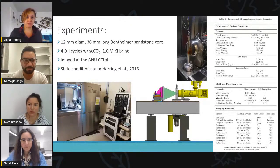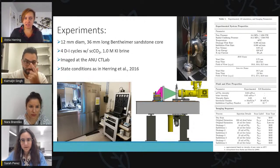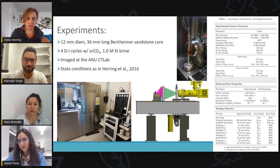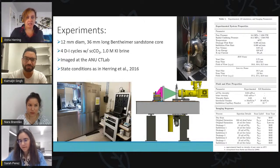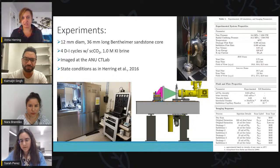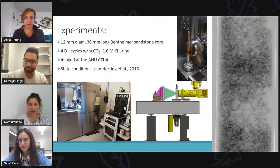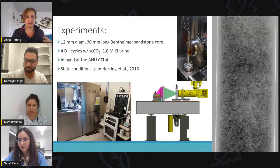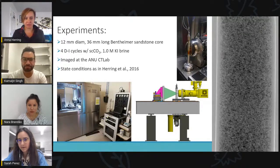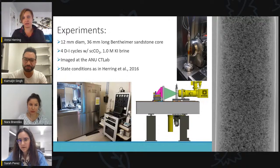So we're looking at a Bentheimer sandstone. We did four cycles of drainage and imbibition injections with supercritical CO2 and brine. All of the injections were undertaken at the same flow rate, which corresponds to a capillary number of about 10 to the minus five. So we're definitely moving into a viscous dominated flow regime. Each injection was at least 25 milliliters of fluid. And for this sample, that corresponded to about 20 pore volumes injected in every injection. I have a movie. Okay, so this is a 2D radiograph view of a CO2 injection into the core.